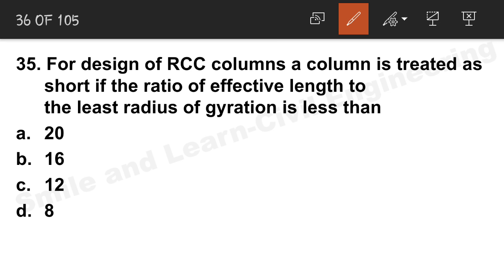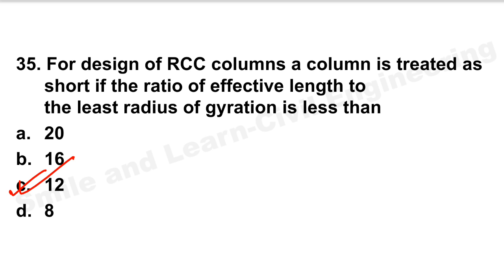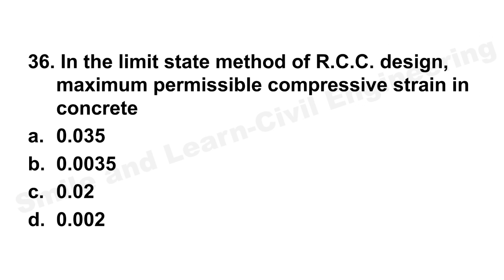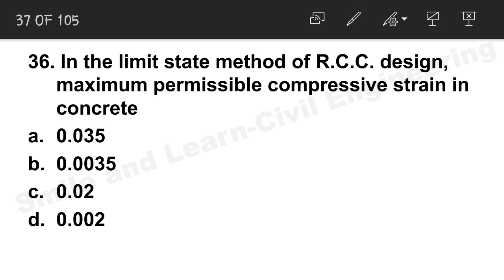Question 35: For design of an RCC column treated as a short column, when is it considered short? If the ratio of effective length to least radius of gyration is less than 12. Option C is the correct answer.